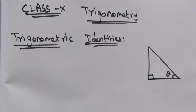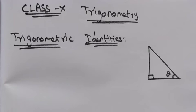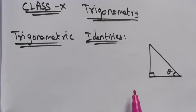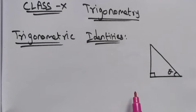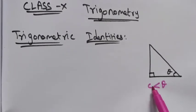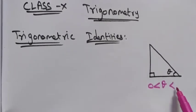Hi students, Class 10 trigonometric identities — this is the third video, Part 3. The trigonometric identities here we have are three identities, and they are satisfied only when theta is greater than 0 and less than 90 degrees.